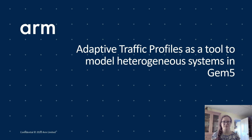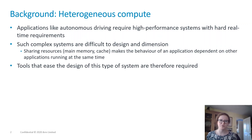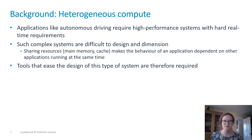Hello and welcome to this talk on adaptive traffic profiles as a tool to model heterogeneous systems in GEM5. Applications, including autonomous driving, combine the need for high performance with strict real-time requirements. The computer chips found in phones and laptops can provide that performance, but features like multi-core chips and caches come at a cost of decreased determinism and increased worst-case execution times. These costs are unacceptable in systems where a longer response time than expected could lead to a danger to life, such as in a self-driving car.